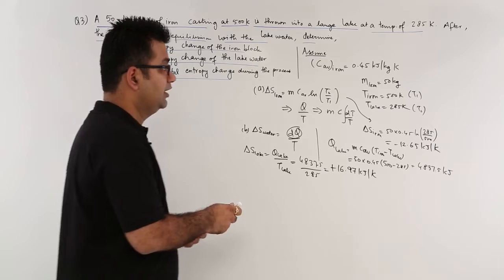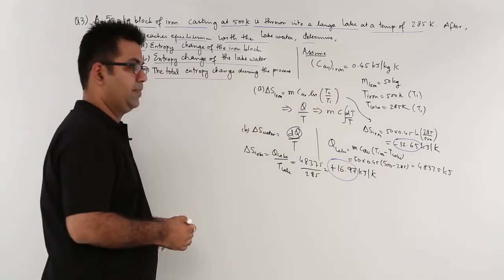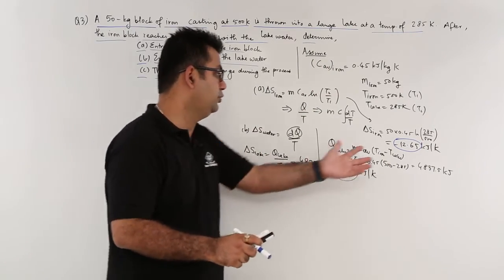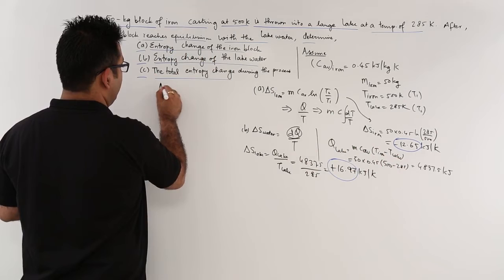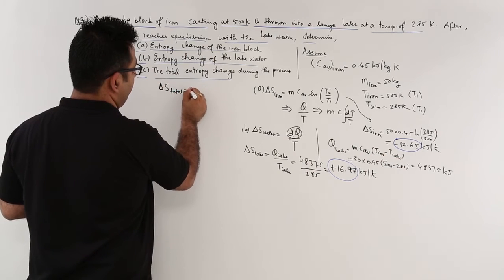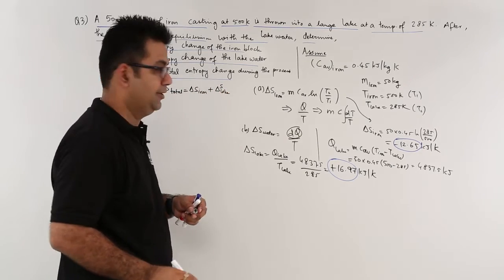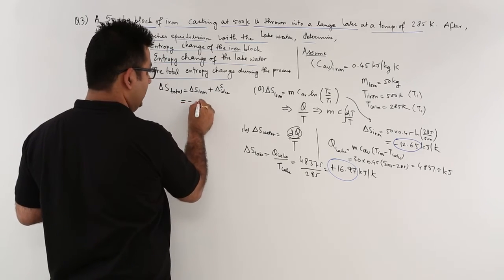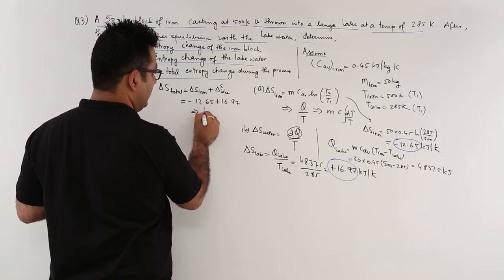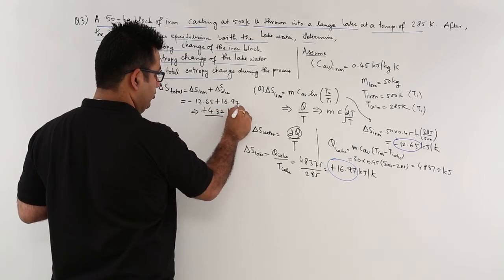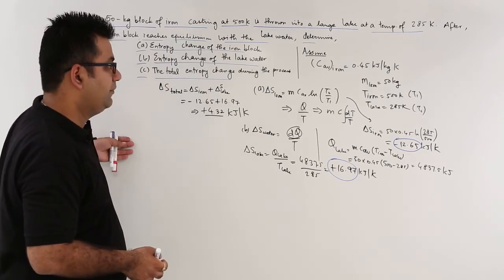Now we have two values: delta S for iron and delta S for lake water. The total entropy change equals delta S for iron plus delta S for lake, which is minus 12.65 plus 16.97, giving a total of plus 4.32 kilojoules per Kelvin. That is how we solve a question like this.